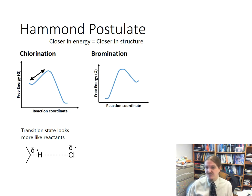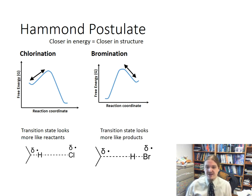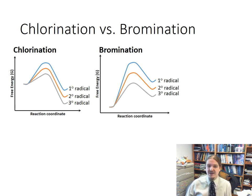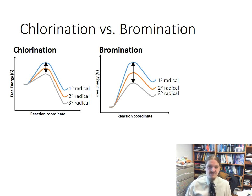For bromine, the first step is endothermic, so the transition state is closer in energy and in structure to the products. The transition state for bromine looks more like the radical product: the carbon–hydrogen bond is almost broken and the hydrogen–bromine bond is almost formed, so there is much more radical character on the carbon. Because there's an energy difference between secondary and primary radicals, there's a similar energy difference between their transition states. You can see from the energy diagrams that the spacing of energy between transition states for primary, secondary, and tertiary in chlorination is small compared to the much larger spacing for bromination.